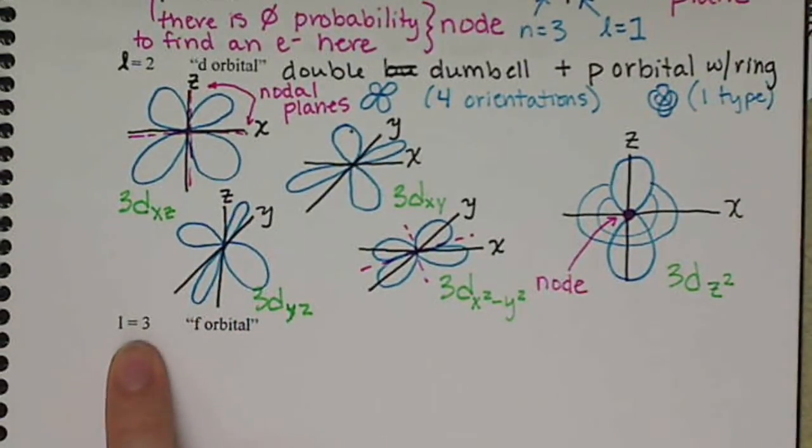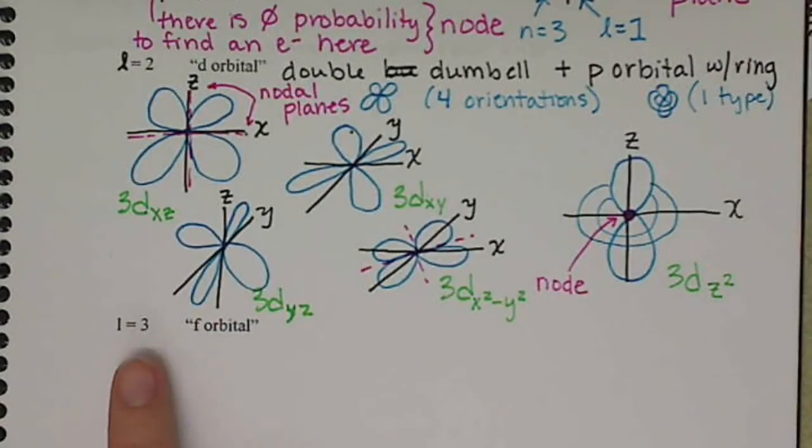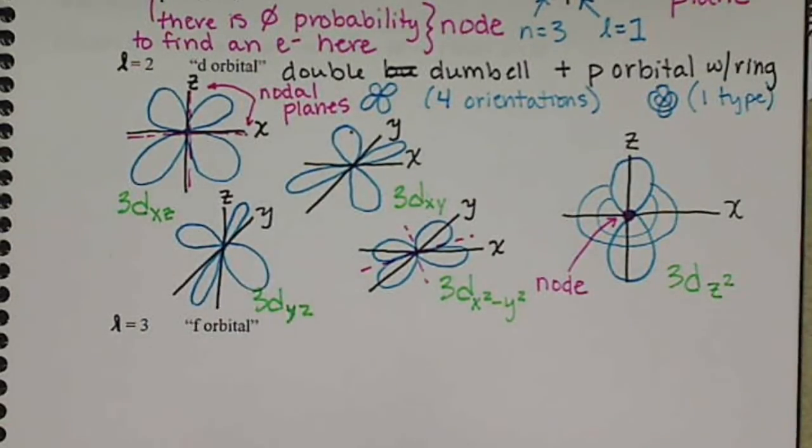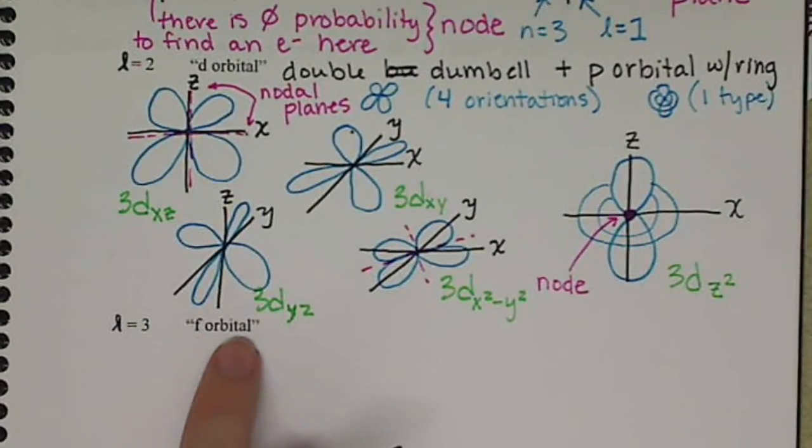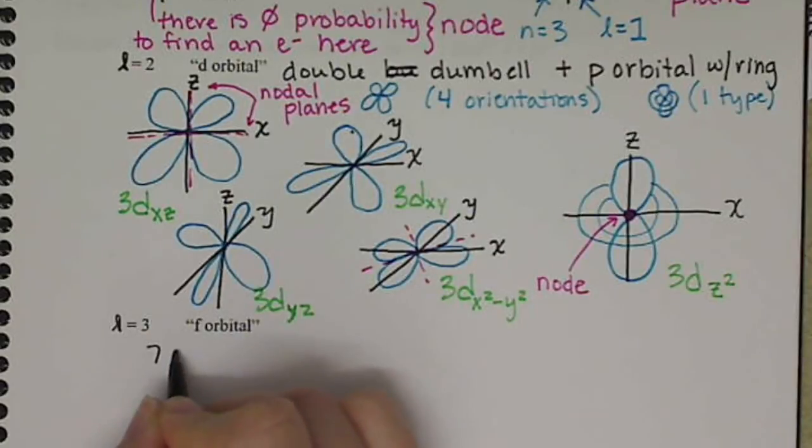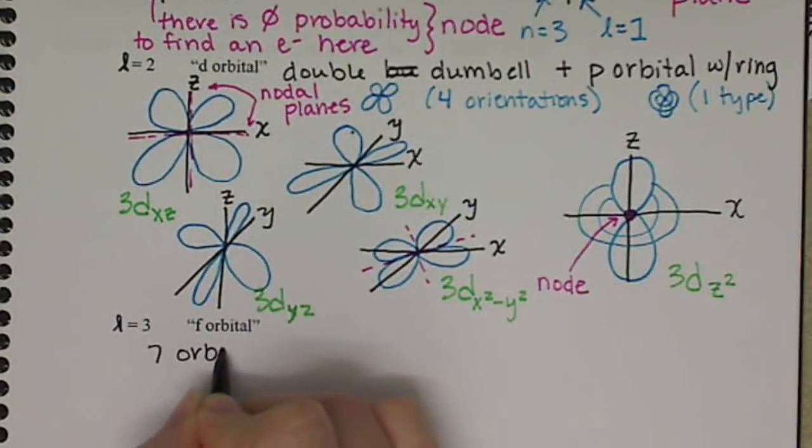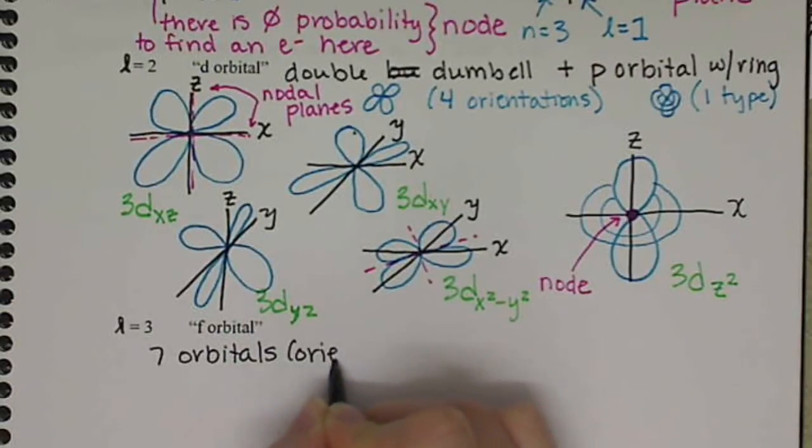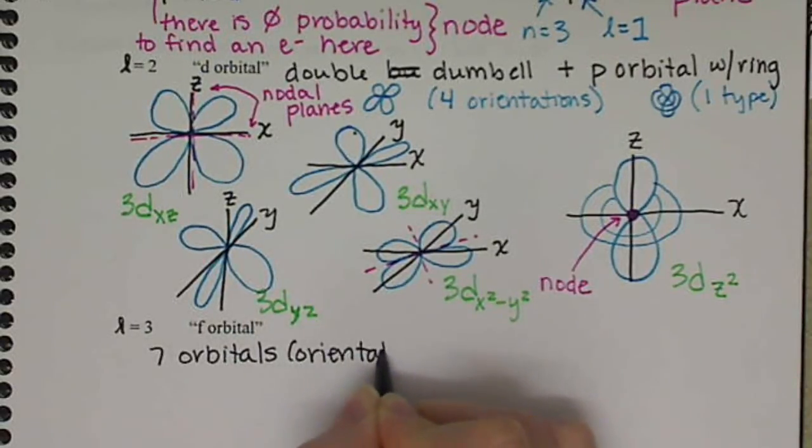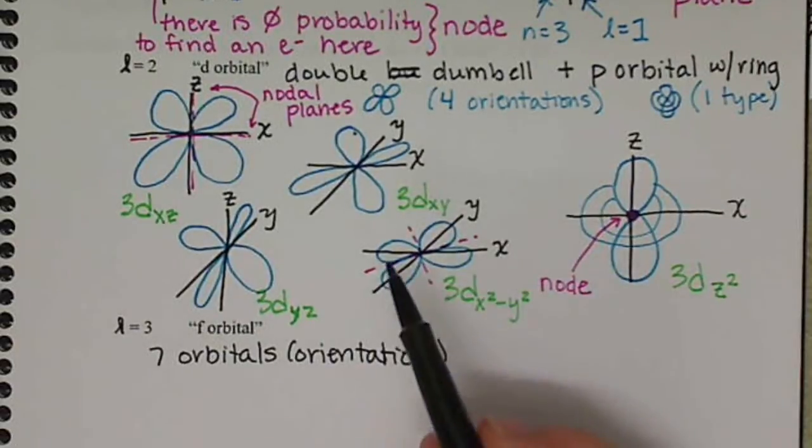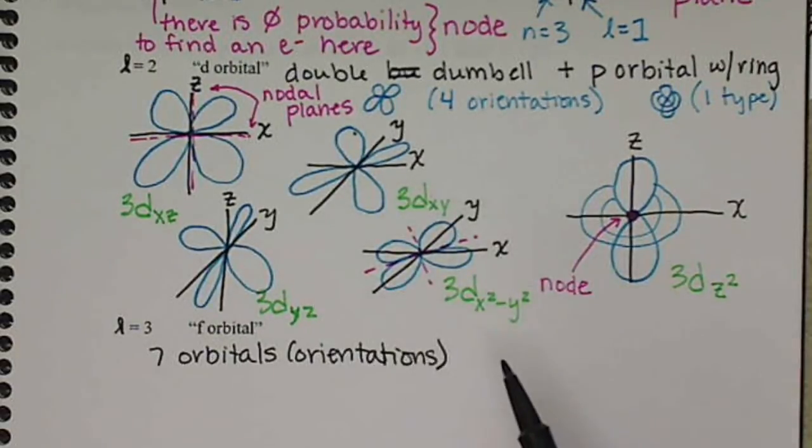Our last angular momentum quantum number that we're going to talk about is l equals 3. This is called an f orbital. And this is going to have 7 different orbitals, so 7 different orientations.